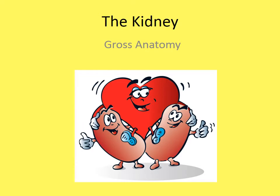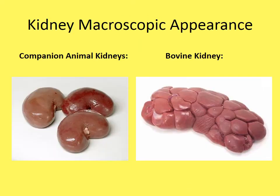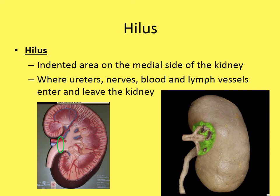Looking at the gross anatomy of the kidney: companion animals such as dogs, cats, and horses have a typical smooth kidney, while the bovine kidney is notably different, with distinct segments. The hilus is an indented area on the medial side of the kidney — this is the entrance and exit where the ureter, nerves, blood, and lymph vessels enter and leave.